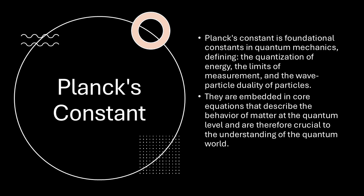Think of frequency like the color of light. Red light has a lower frequency than blue light. Planck's Constant tells us how much energy is packed into each color of light. So higher frequency means more energy per photon.